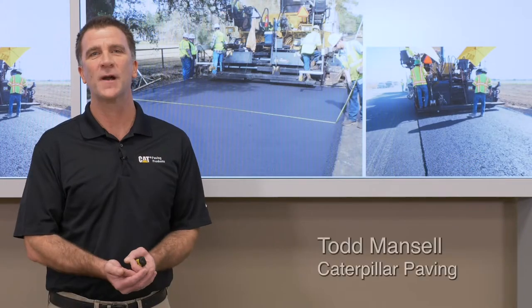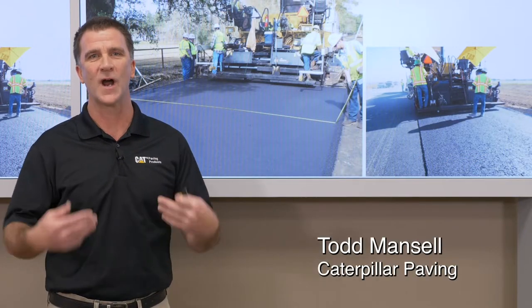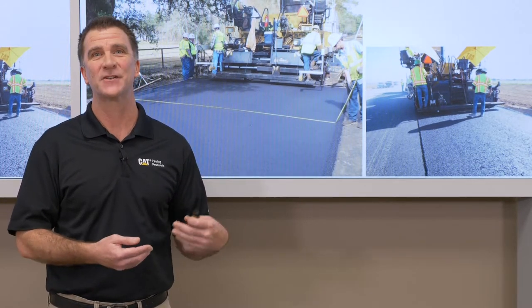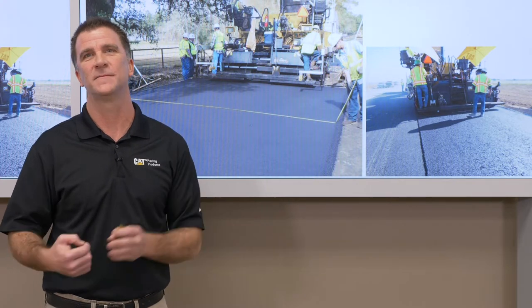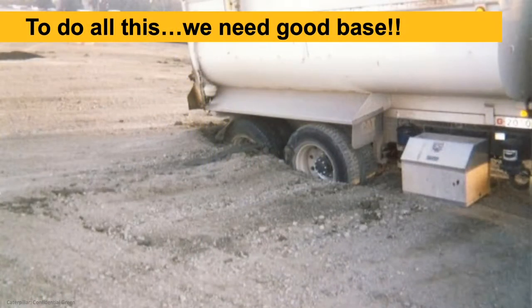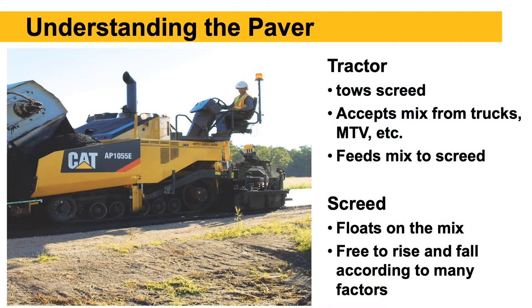If everything is set up properly on the paver and we're operating things correctly using our best practices, that matte texture should look the same from one end gate to the other, all the way across the width of the mat. To do all this, we need good base. This picture shows poor base conditions before we pave. To do all the best practices, we have to have good base to start with.